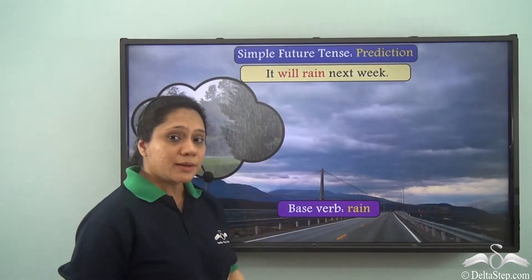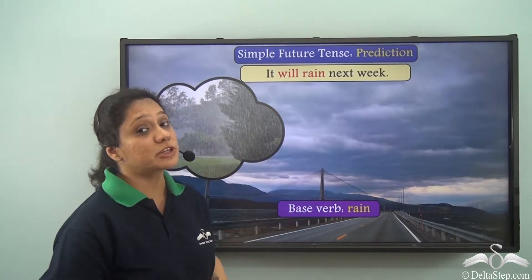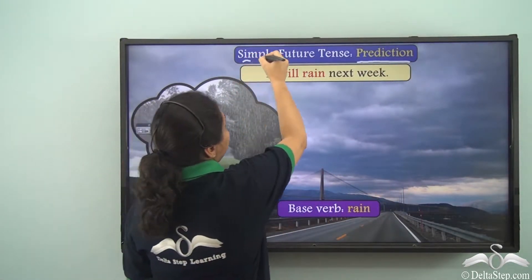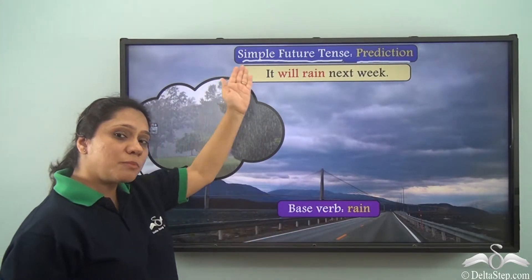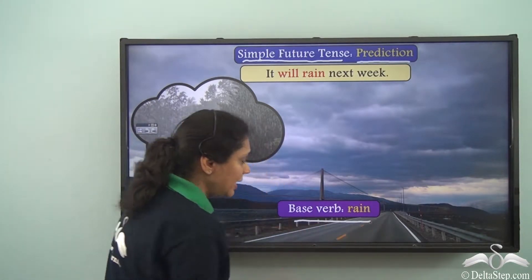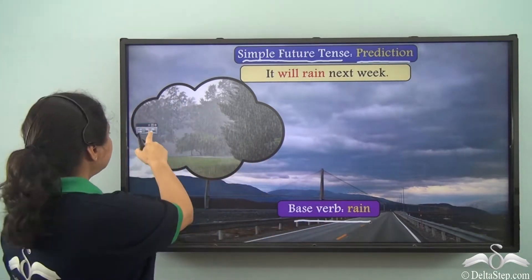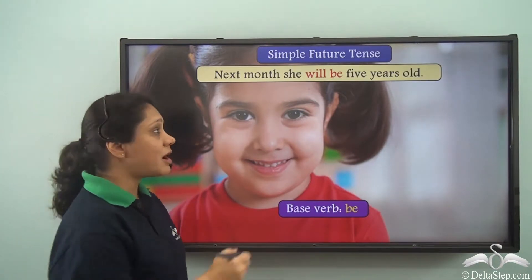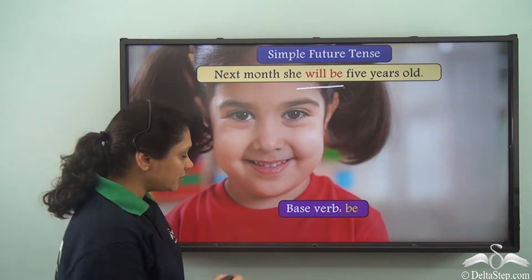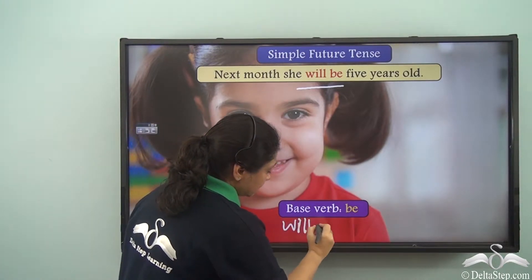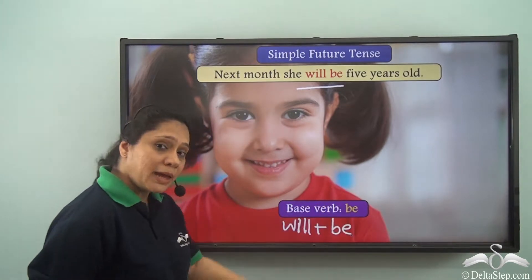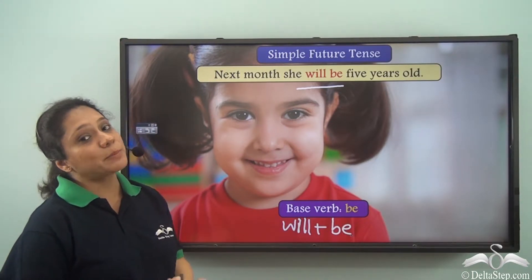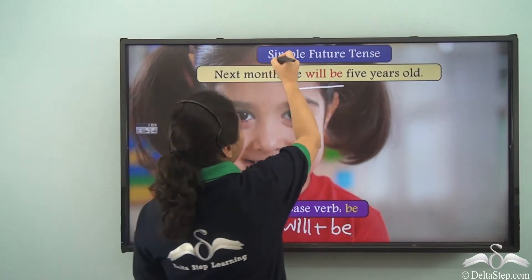It will rain next week. This sentence gives us a prediction that it will rain next week, so it is in the simple future tense. The verb 'will rain' is formed by adding 'will' to the base verb 'rain.' Next month she will be five years old. The verb is 'will be,' formed by adding 'will' to the base verb 'be.' This sentence is also in the simple future tense.